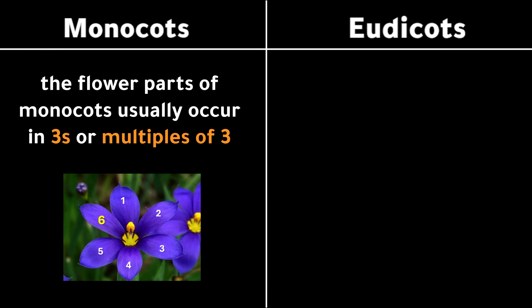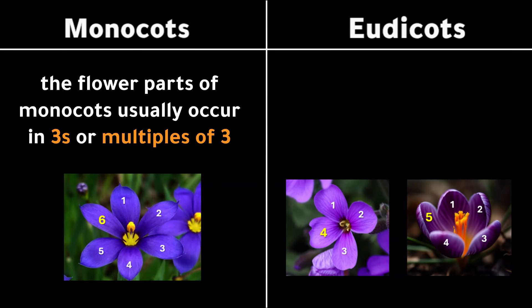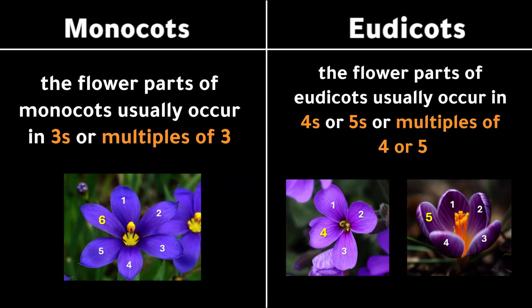The flower parts of monocots usually occur in threes or multiples of three. The flower parts of eudicots usually occur in fours or fives, or multiples of four or five.